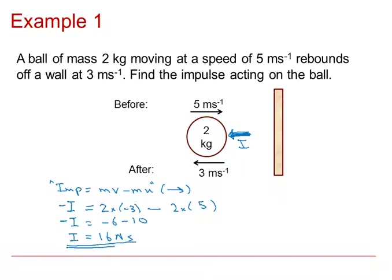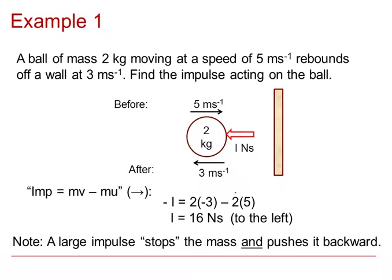The answer is positive 16 Newton seconds, which means the arrow on the diagram is in the correct direction — the impulse is to the left, pushing the ball backwards. We ended up adding the two numbers together to get 16 because the wall had to stop the ball and push it backwards at 3 metres per second, giving 6 plus 10 equals 16. So we needed a big impulse of 16 Newton seconds to the left.